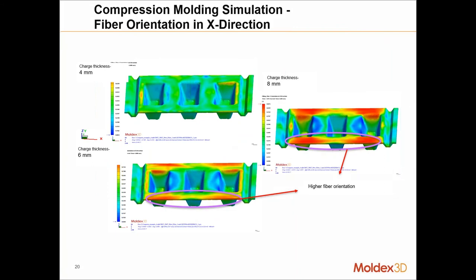Looking at fiber orientation with different charge thicknesses: depending on where fiber alignment is important for part strength or mechanical properties, the charge thickness — due to difference in flow — will affect how fibers are aligned. Anything shown in red is highly oriented in the X direction; anything close to blue means it is random or not aligned in X. We can see the 8mm and 6mm charges have high fiber orientation in the X direction.